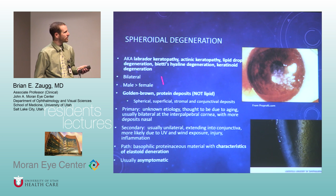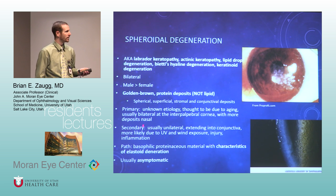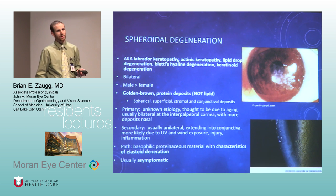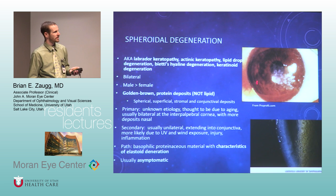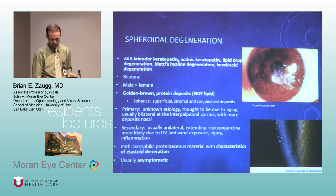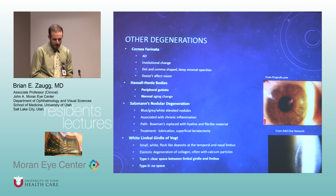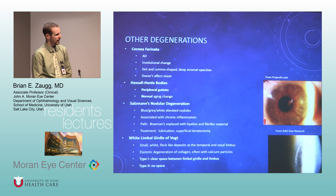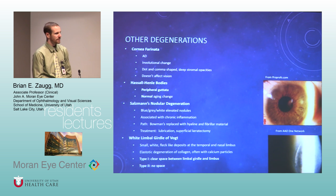Spheroidal degeneration has lots of different names. It's usually bilateral and not lipid — just weird protein deposits. Not really understood what it is. Patients usually don't notice it, but if it's visually significant, you remove them. The limbal girdle of Vogt — I see this a lot, a little clear space at the limbus then a little band of whitening, usually flat and not very elevated. It's collagen changes in the anterior stroma. Hassall-Henle bodies: peripheral non-central gutata — just normal aging.